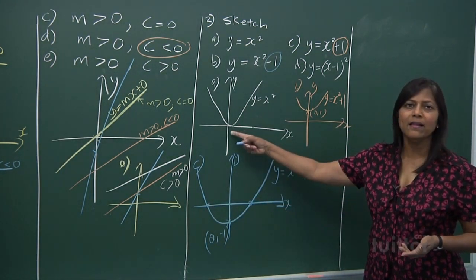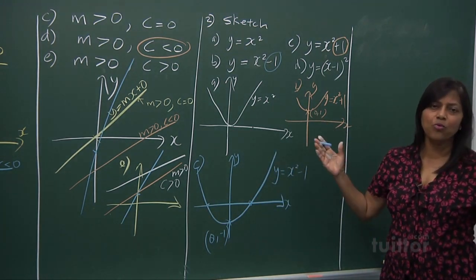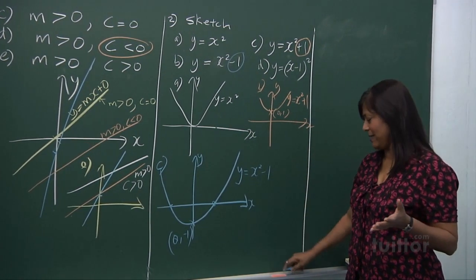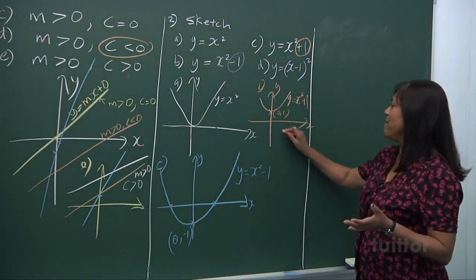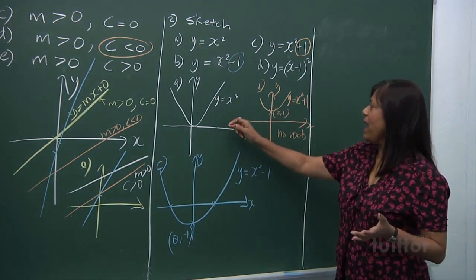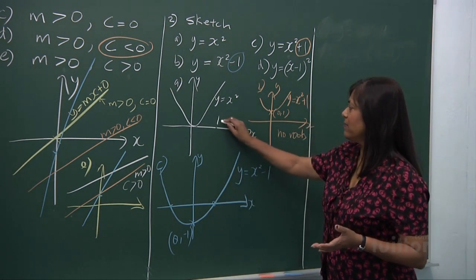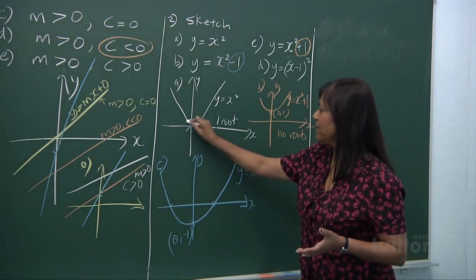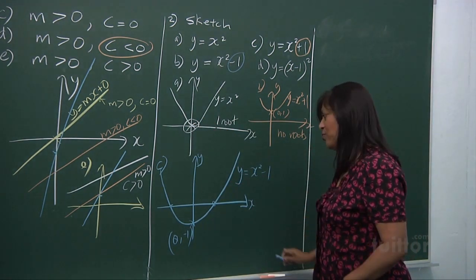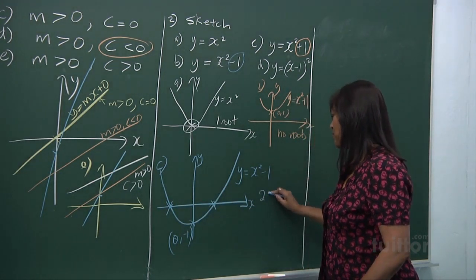Unlike here, where there is one root, and in this case there are no roots because it does not cut the axis. Please do remember: no roots here; here, one root — that's where the root is; and in this case, there are two roots. The roots are here — two roots.